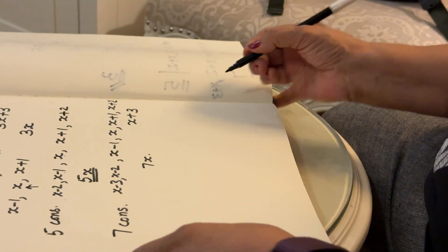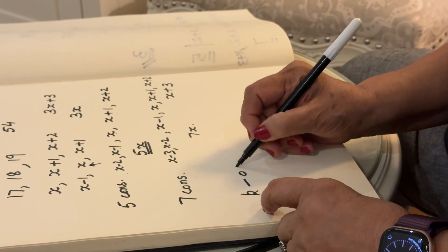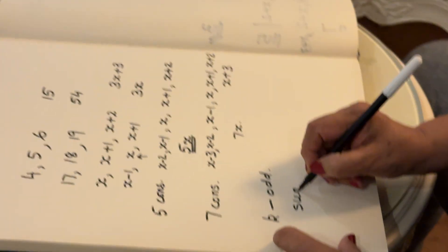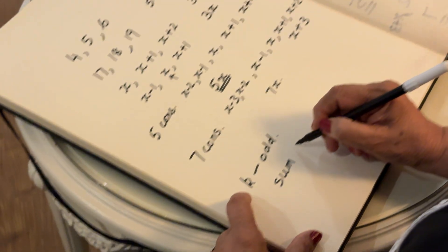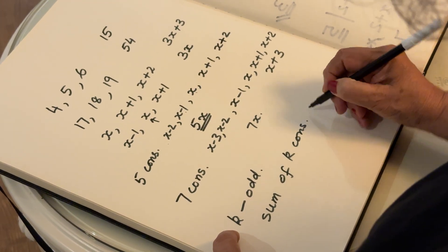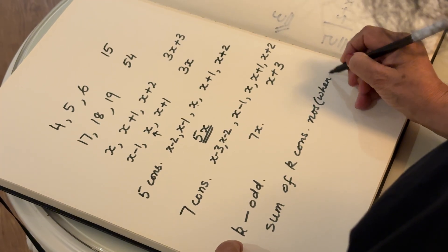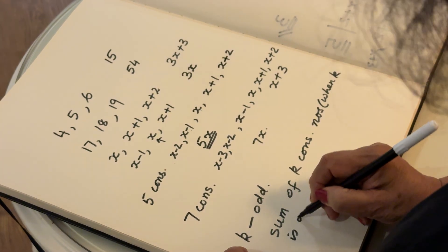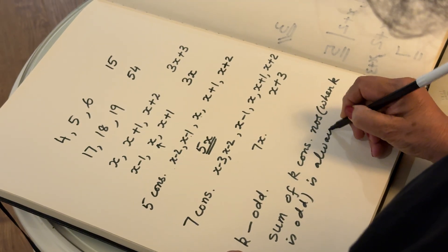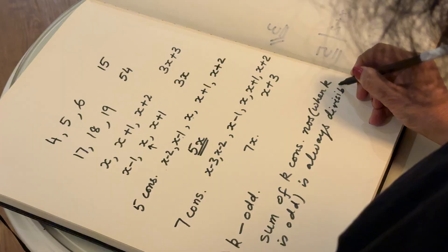So what are we getting in general? When k is odd — that means the number of numbers is odd — their sum will always be divisible by k. The sum of k consecutive numbers, when k is odd, is always divisible by k. Isn't this a beautiful result?